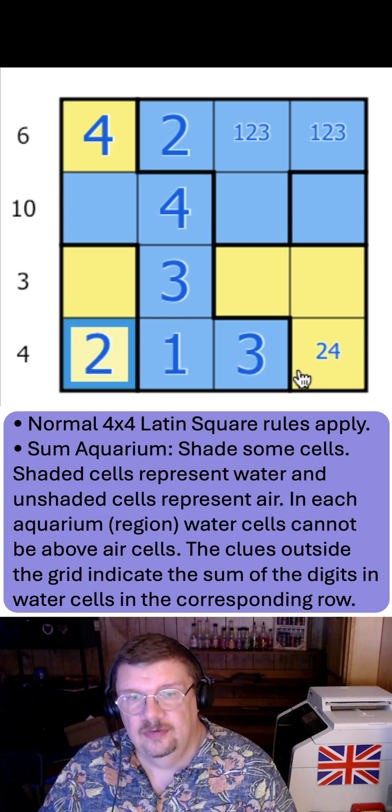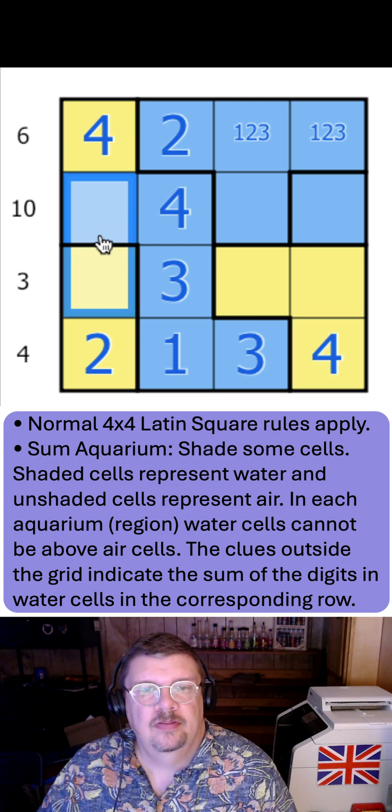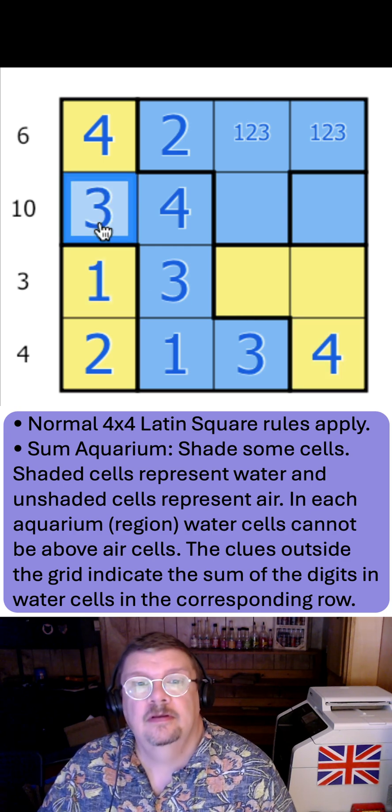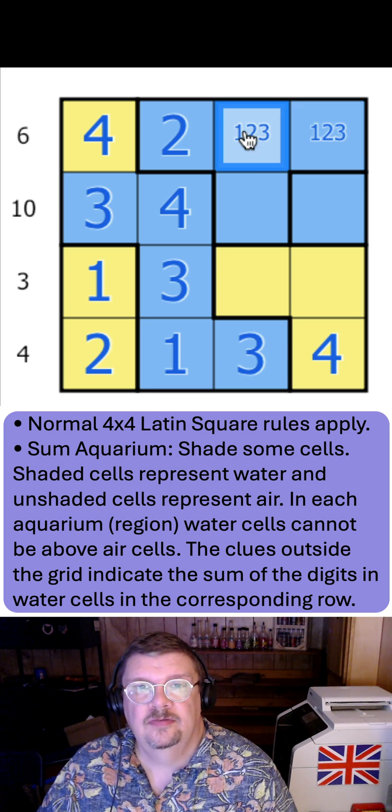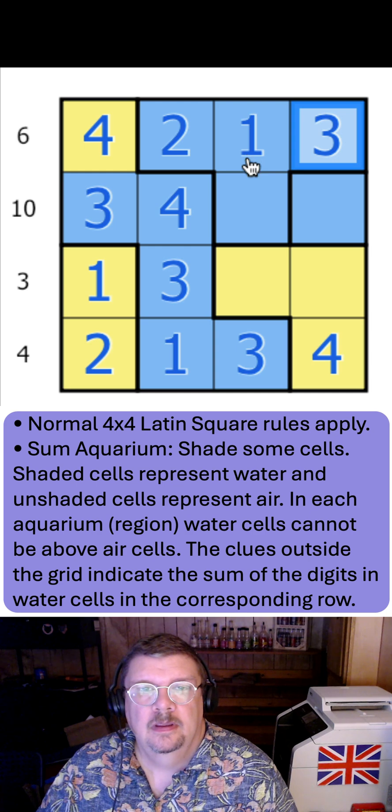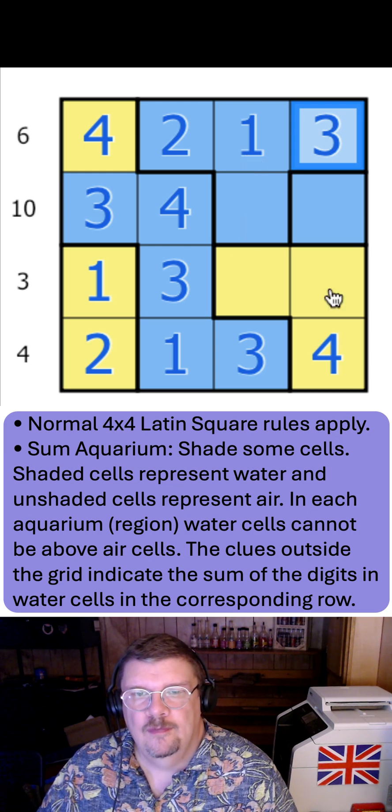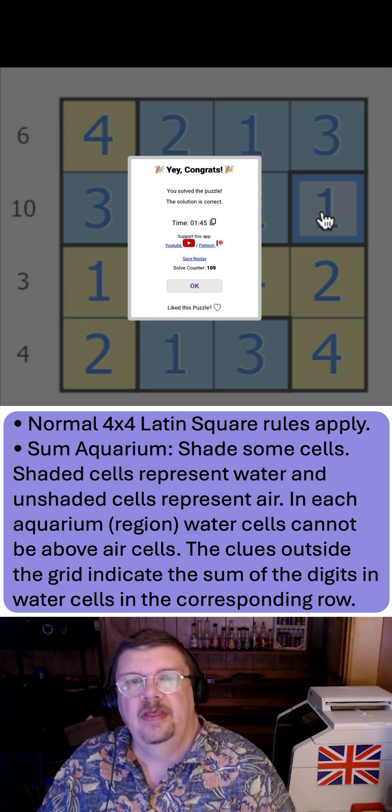This 4 makes this 2 and this 4. That's a 1, 3 pair and we know the order. That is a 1 there and a 3 there. 4 in this row must be here. That's a 2. That's a 2 there and a 1 there.